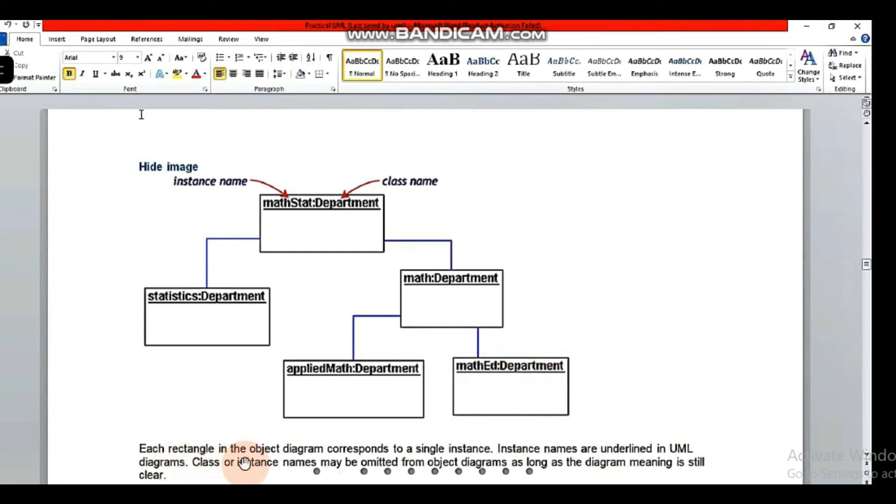Each rectangle in the object diagram corresponds to a single instance. Instance names are underlined in UML diagrams.